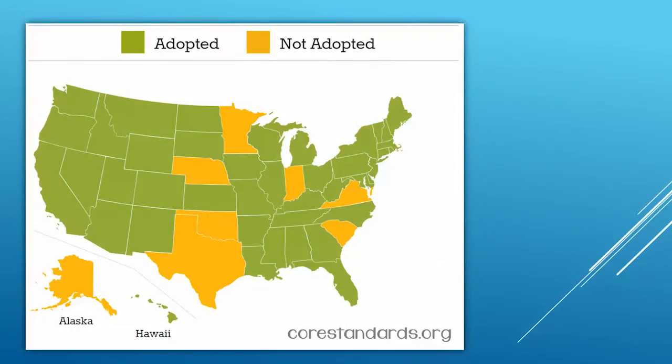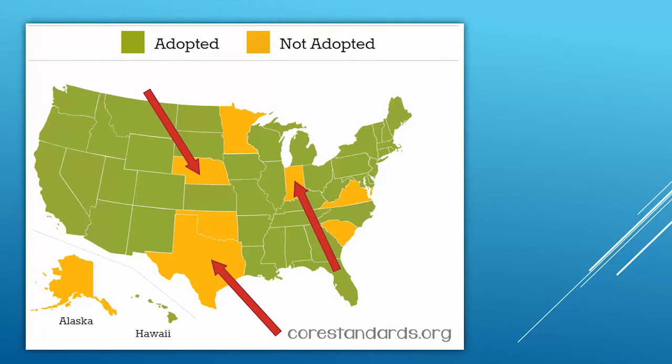Here's a little background. The Common Core state standards were developed in 2009 as standardized learning objectives in math and English language arts and literacy across the United States. This allows all students, no matter where they live, to learn the same skills in each grade level. However, not all states chose to adopt the Common Core state standards. We'll talk more about that in a few minutes.